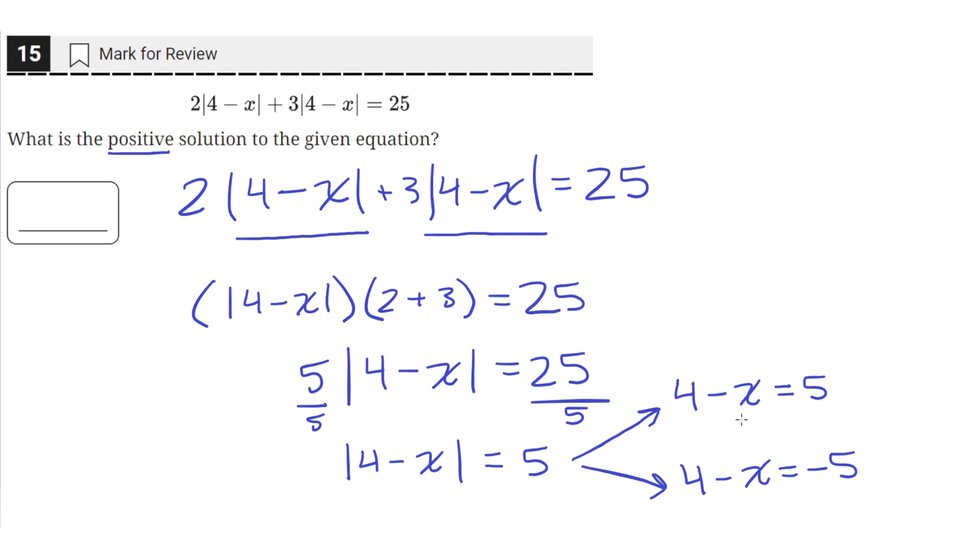Now we can solve for the value of x in both of these equations. The first equation says that the value of x is equal to negative 1, since 4 minus negative 1 is 4 plus 1, so 4 plus 1 equals 5. And then the second equation says that the value of x is 9, because 4 minus 9 is equal to negative 5.